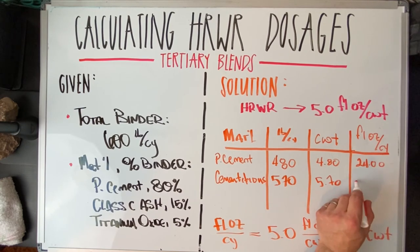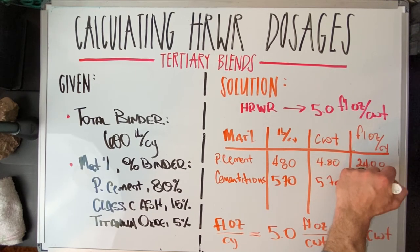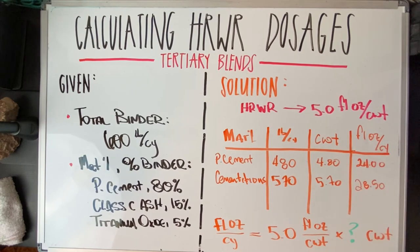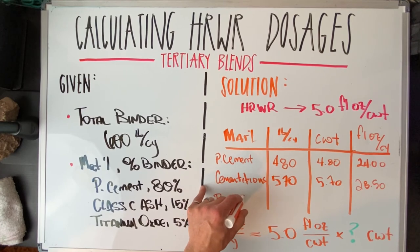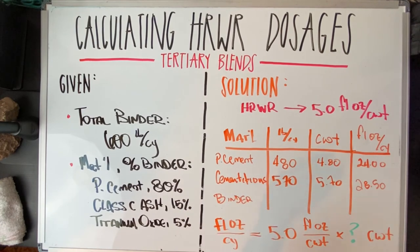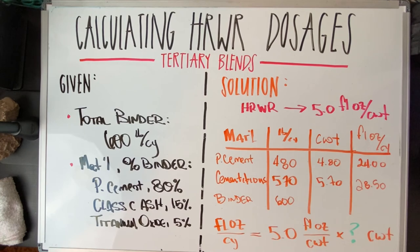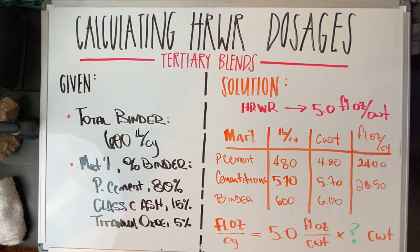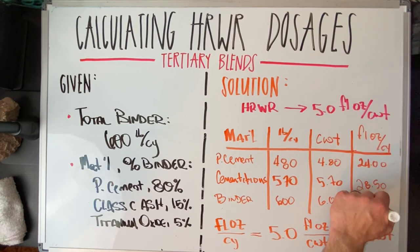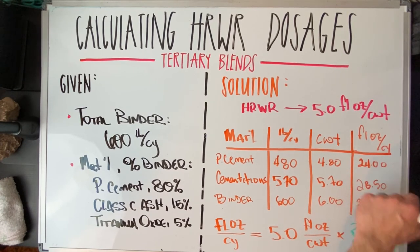Our final one includes titanium dioxide — we're going to call that a binder. Now we've got 100 percent of 600, which is 600 pounds, giving us 6.0 hundredweights. And 6.0 times 5 — correct me if I'm wrong, Haley — that's 30 fluid ounces per cubic yard.